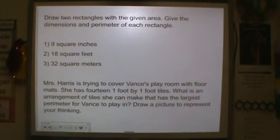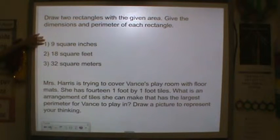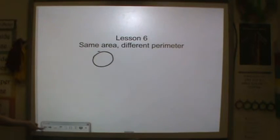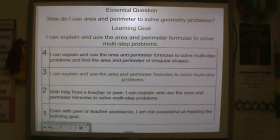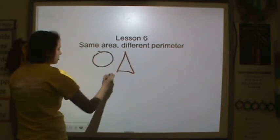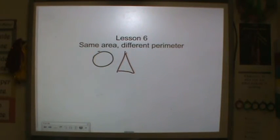All right. Now it is your turn. Here's your homework for tonight. Draw two rectangles with this given area. Give the dimensions to draw the picture and find the perimeter of each rectangle. You have to do it for these three. And then here's your word problem. Mrs. Harris is trying to cover Vance's playroom with floor mats. She has 14 one foot by one foot tiles. Those are the mats that she's going to use. What's an arrangement of tiles or mats that would be the largest perimeter for Vance to play in? Draw a picture to represent your thinking. After you do your problems for tonight, go ahead and give yourself a rating on the learning goal. And then put that inside of a triangle for me. Thank you for your hard work and I will see you tomorrow.